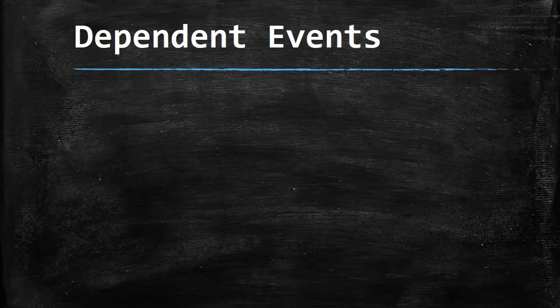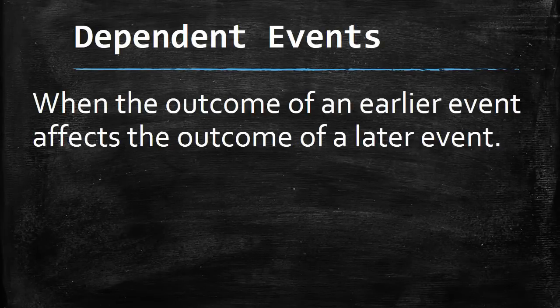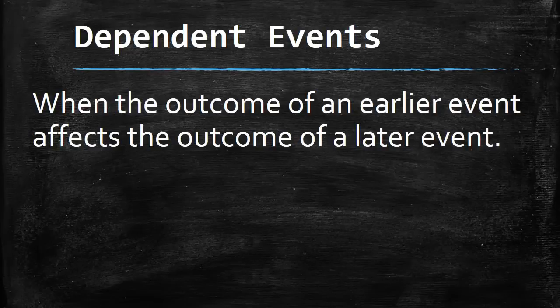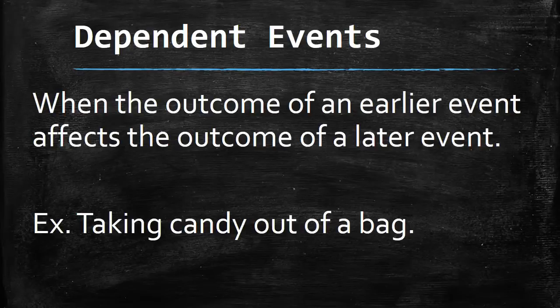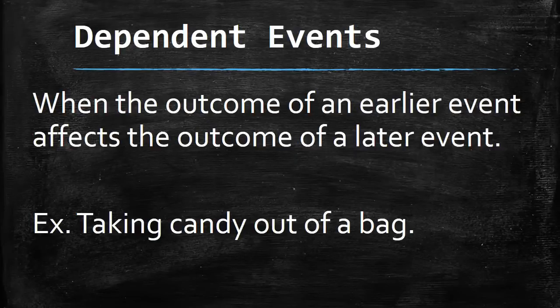On the other side, we have what are called dependent events. Dependent events are when the outcome of an earlier event affects the outcome of a later event. If you're looking at a bag full of candies - say you've got red candies and blue candies - every time you take out a candy, there's one less of that type for you to get.